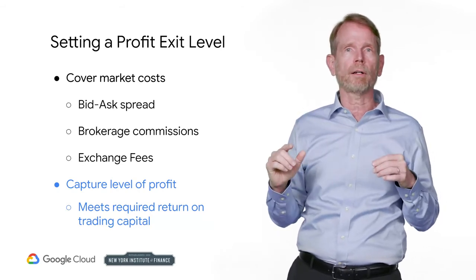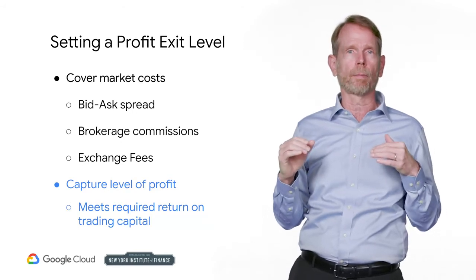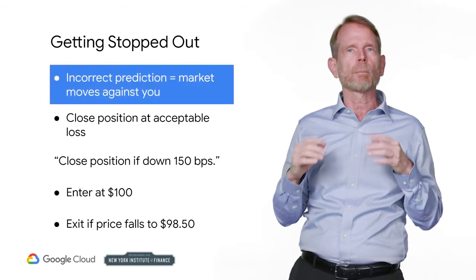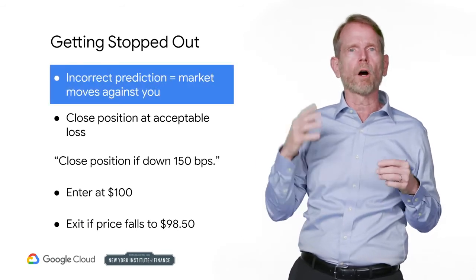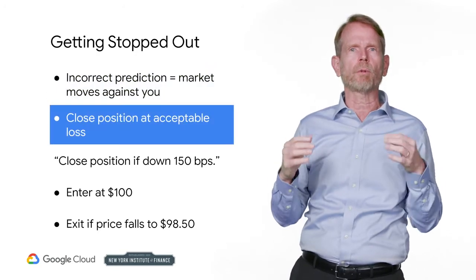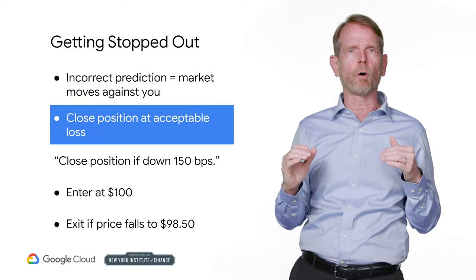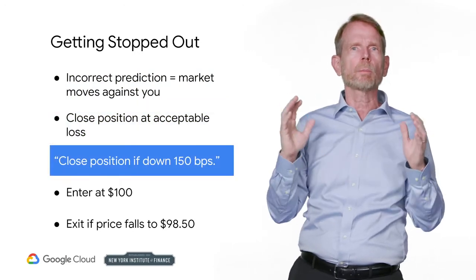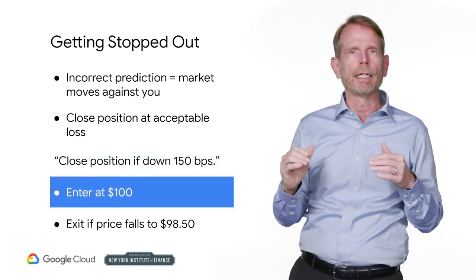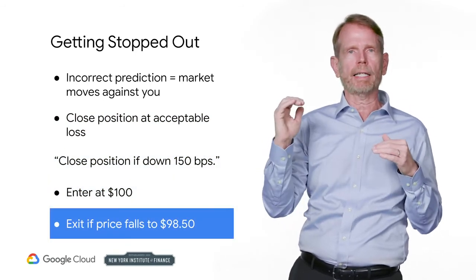Your goal is to get profited out and earn at least your required return on trading capital. Your worst outcome is getting stopped out. Suppose you got the direction wrong and the market moves against you — you want to exit the trade with as little pain as possible. Here's an example of a stop loss: close the position when you're down 150 basis points. Getting in at 100, you would get stopped out at 98.50.